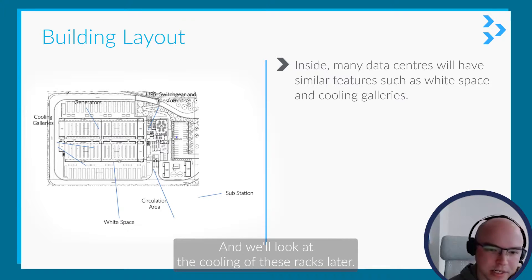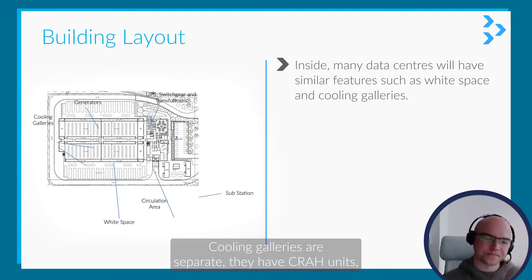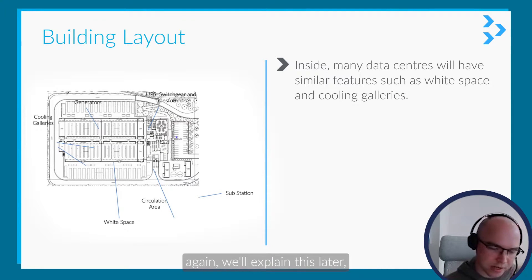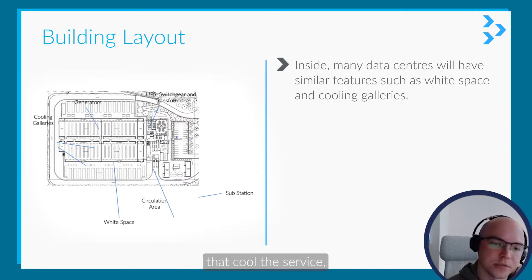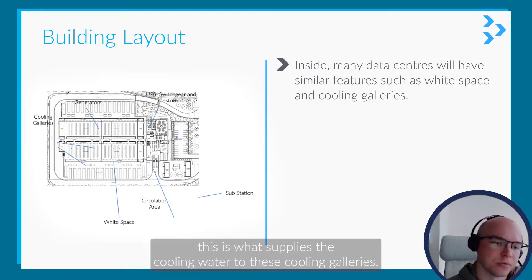We'll look at the cooling of these racks later. Cooling galleries are separate — they have CRAH units, which we'll explain later, that cool the servers. Chilled water risers supply the cooling water to these cooling galleries.